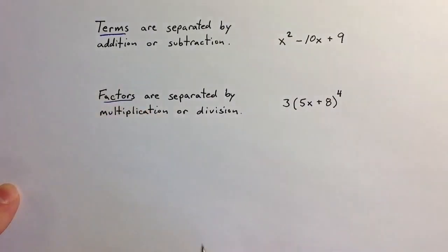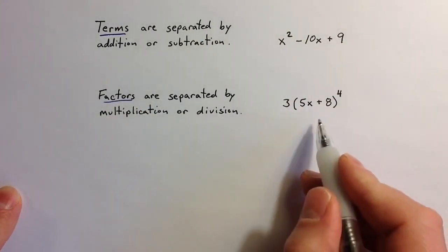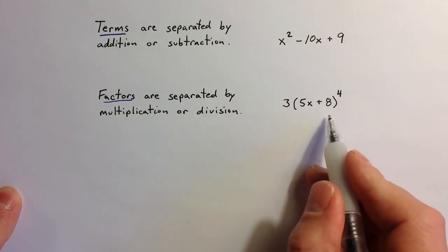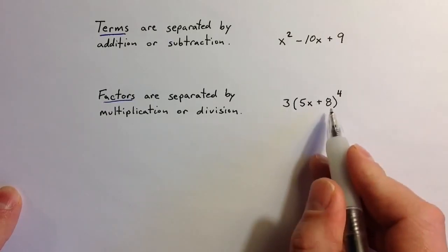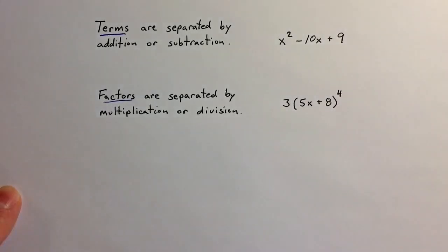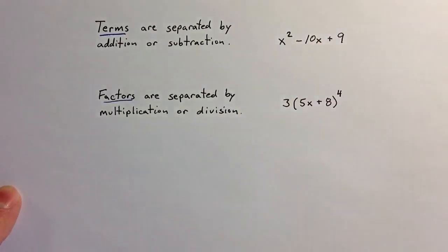Factors are separated by multiplication and division. In this example, we see 3 is a factor, and so is 5x plus 8 — it's a factor that's raised to the fourth power. Factors can be a part of terms, and terms can be a part of factors.